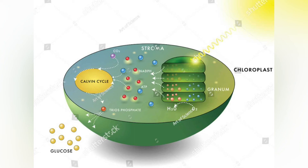Despite this unique composition, plant thylakoid membranes have been shown to assume largely lipid bilayer dynamic organization. Lipids forming the thylakoid membranes, richest in high-fluidity linolenic acid, are synthesized in a complex pathway involving exchange of lipid precursors between the endoplasmic reticulum and inner membrane of the plastid envelope, and transported from the inner membrane to the thylakoids via vesicles.